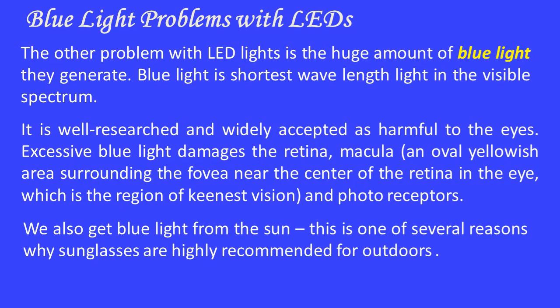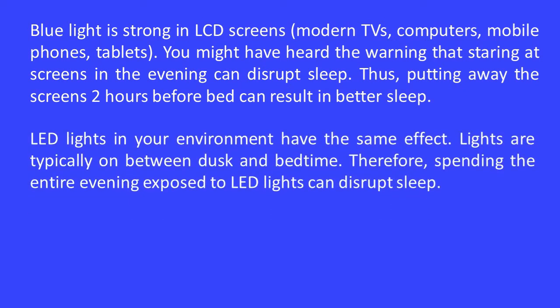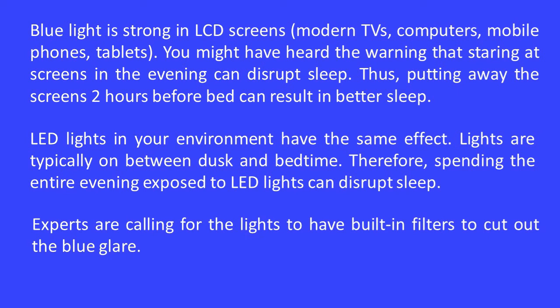We also get blue light from the sun, which is one of the reasons why sunglasses are highly recommended outdoors. Blue light is strong in LCD screens, modern TVs, computers, mobile phones, and tablets. You may have heard the warning that staring at screens in the evening can disturb sleep, and putting away screens two hours before bed can result in better sleep. LED lights in your environment have the same effect — spending the entire evening exposed to LED lights can disturb sleep. Experts are calling for lights to have built-in filters to cut out blue glare.